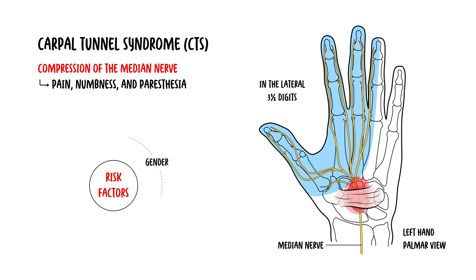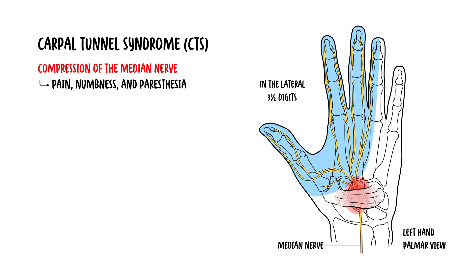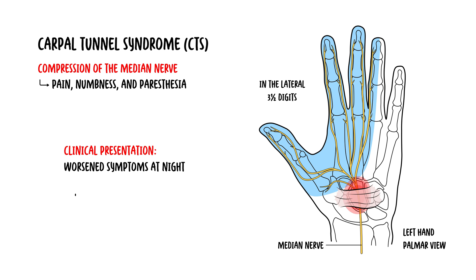Risk factors include gender — as mentioned, women — age, obesity, wrist injuries, and certain systemic conditions such as diabetes and rheumatoid arthritis. The typical clinical presentation: people typically report worsening symptoms at night. Symptoms are worse at night because when individuals are not active, there is an increase in fluid around the hands and an increase in carpal tunnel pressure. They often wake up and have to shake their hand to get relief.